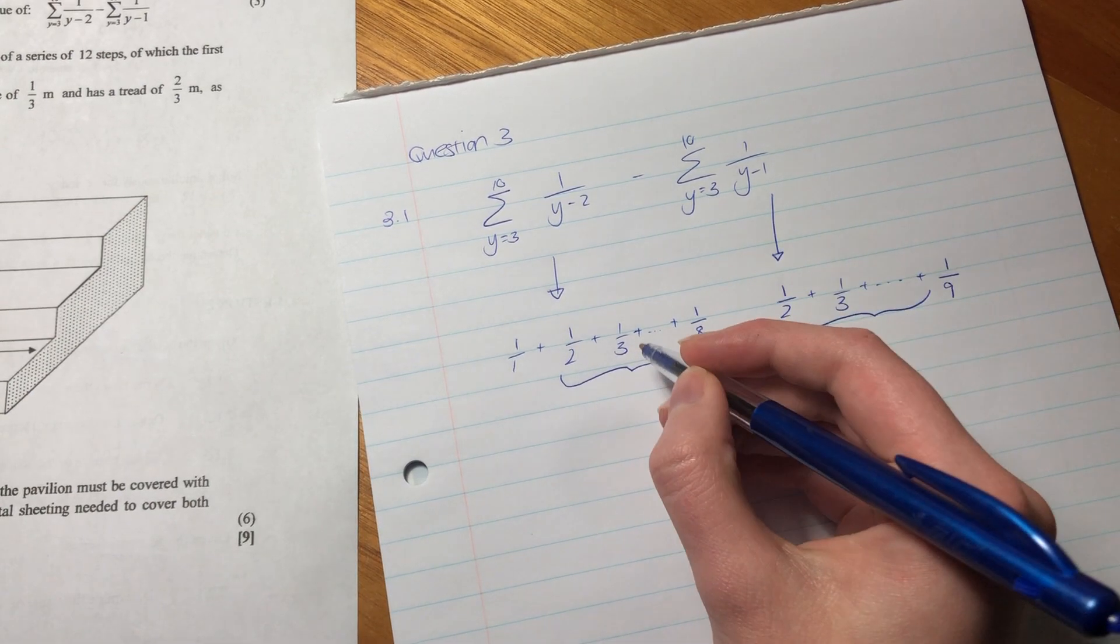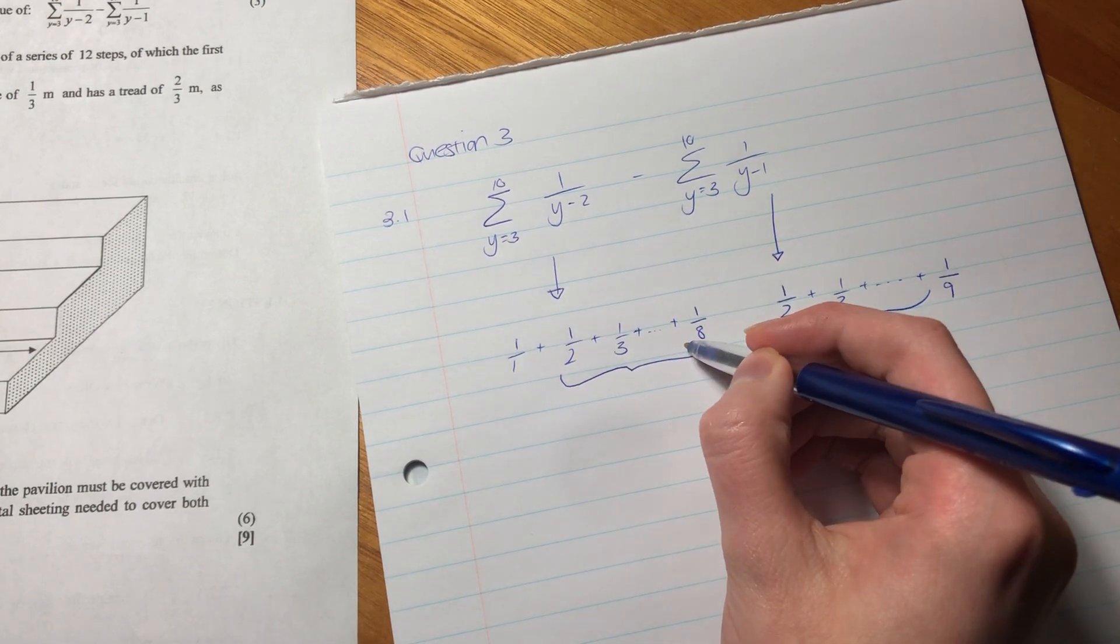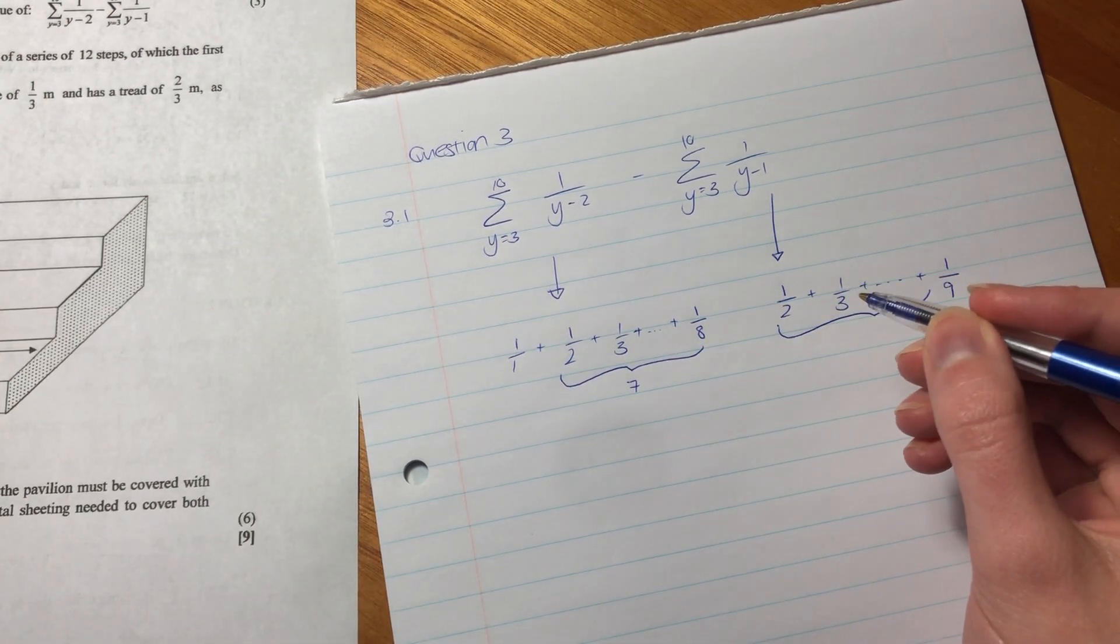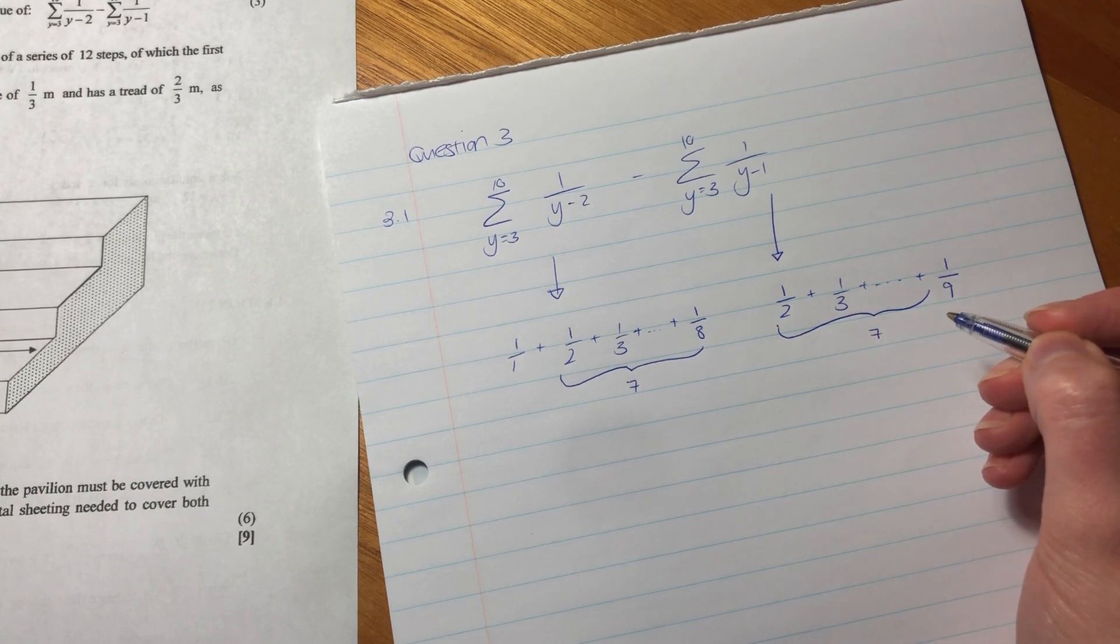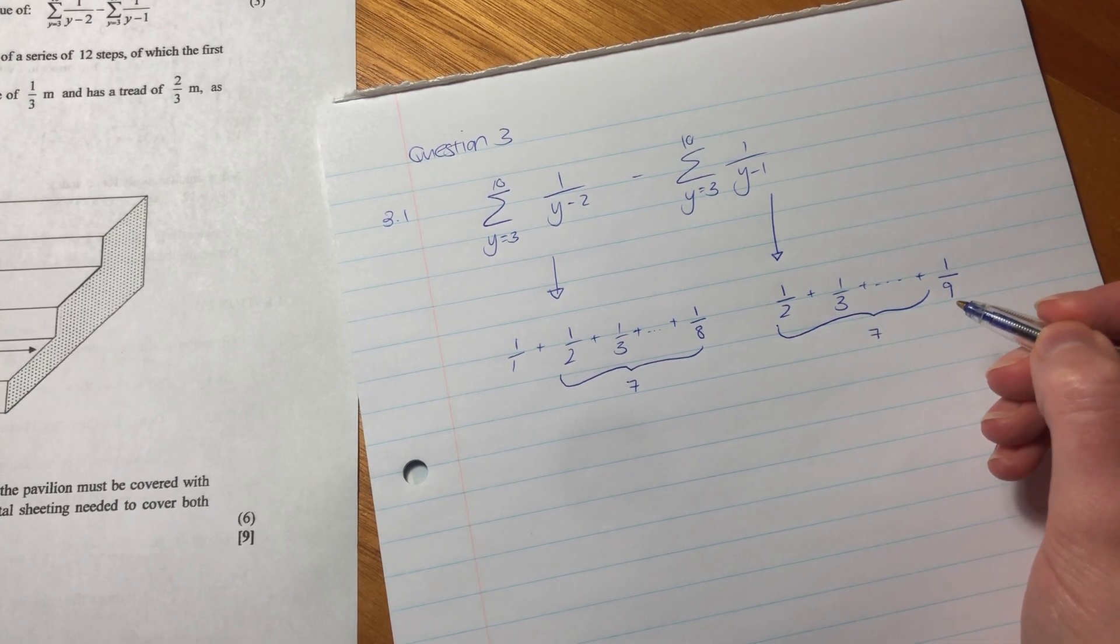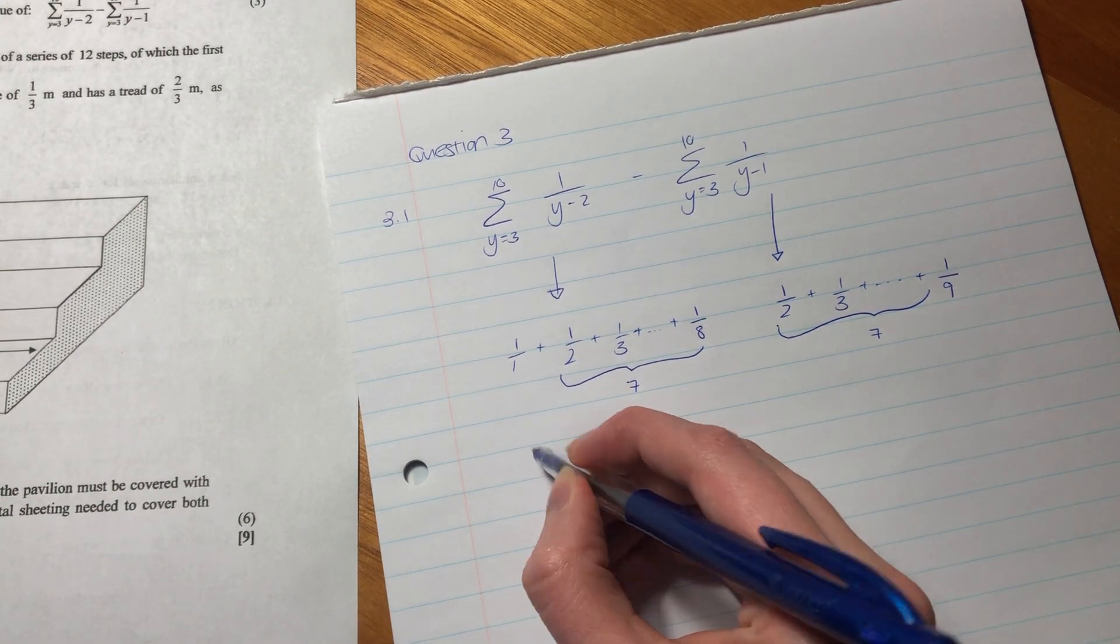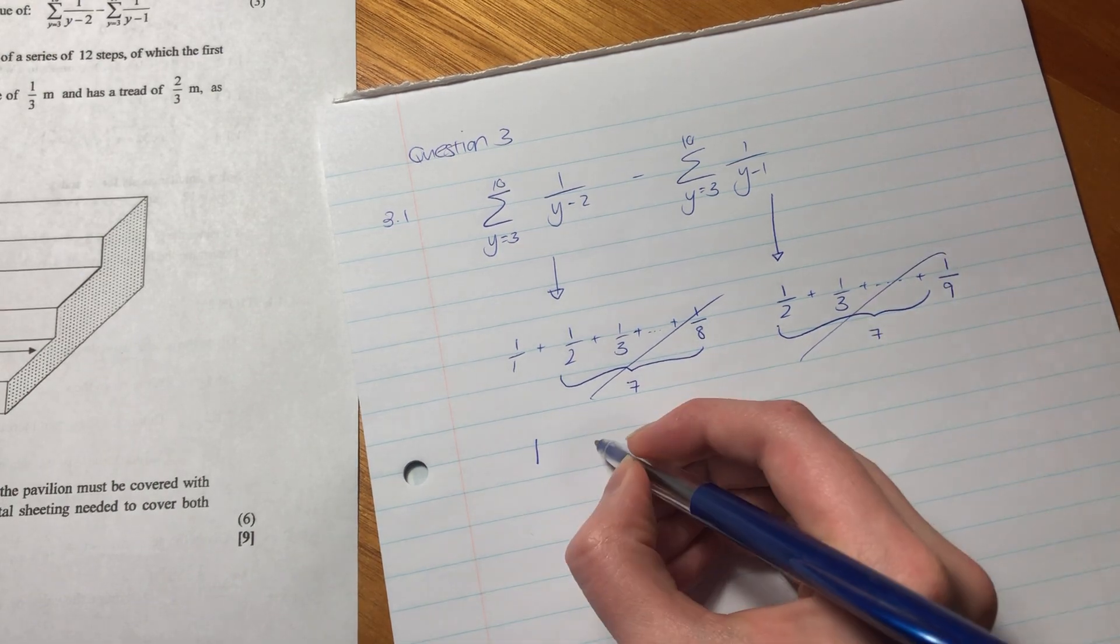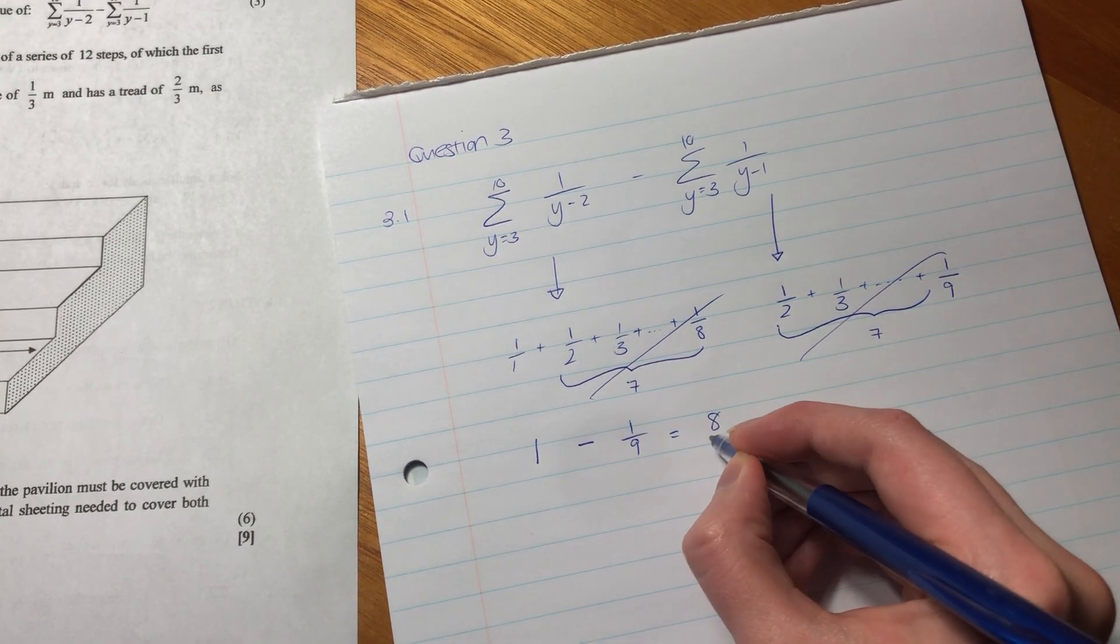The second sum has seven terms—10 minus 3 equals 7. Those seven terms will be cancelled by the first sum's corresponding terms. All that we're left with is 1 from the first sum minus 1/9 from the second.